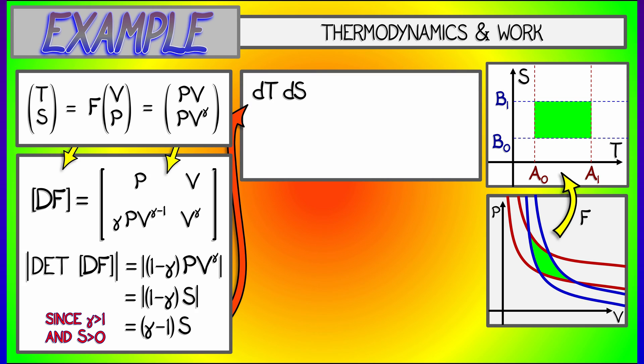Okay, so what do we have? We have DTDS equals gamma minus 1 times PV to the gamma, or S, times DVDP. But we need to go the other way. We need to compute volume, or rather area, in the PV plane. So, what do we do in this case?